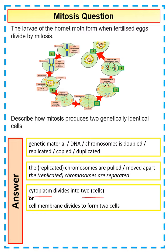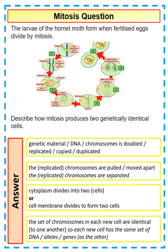The important part is that you're talking about the cytoplasm dividing, not the cell. The cell membrane divides into two — the proper name for that is cytokinesis. Then finally, the set of chromosomes in each new cell are identical to one another, so the cells are genetically the same. They've got the same DNA, genes, or alleles as each other, which is really important because the question talks about them being genetically identical.